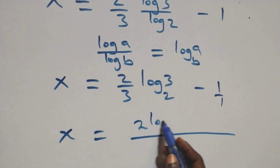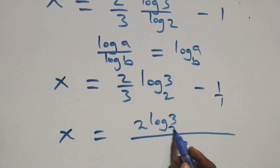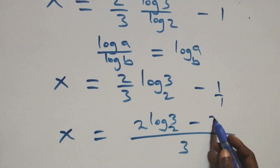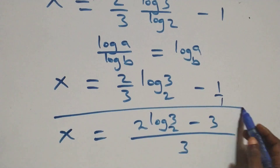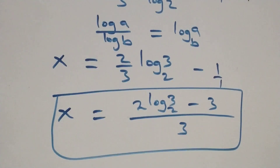Bringing everything together as one fraction, we have x equals 2 log₂3 times 2 minus 3, all over 3. Let us check whether this value of x satisfies the given problem.